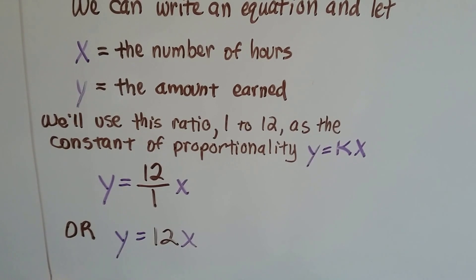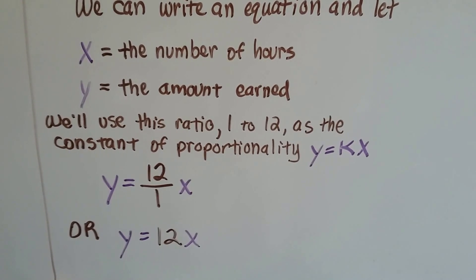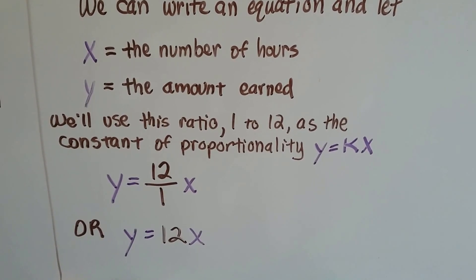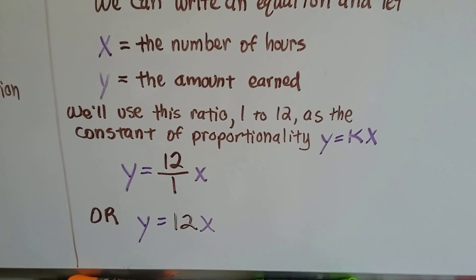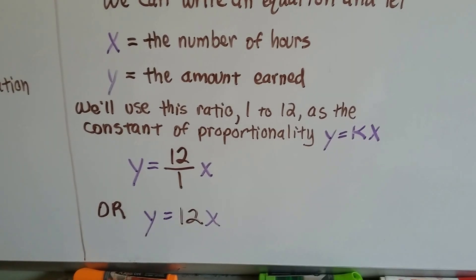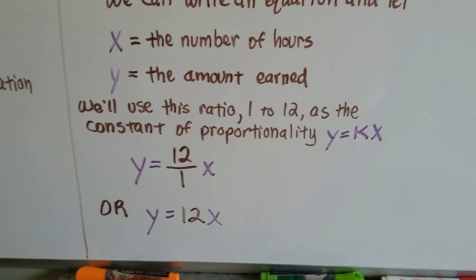So we're going to use y equals kx. So y is going to equal 12 over 1, $12 over 1 hour, times x. Or y is going to be equal to 12x, 12 times x. See?